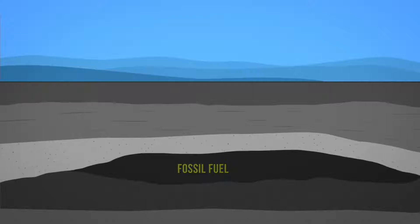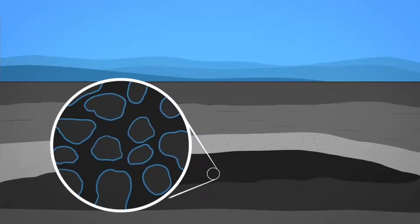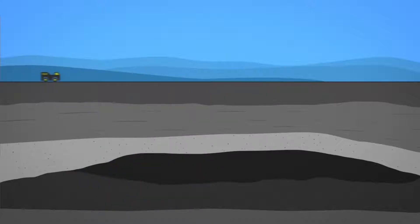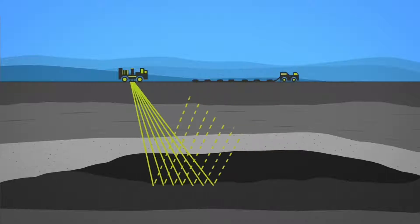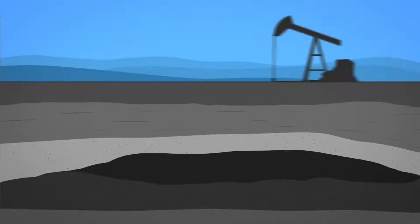Oil is found in underground geological formations called reservoirs. The rocks found in a reservoir have various physical properties that allow them to hold hydrocarbon reserves. Through exploration activities such as seismic surveying, rock core sampling, and other advanced technologies, geologists locate oil reserves.